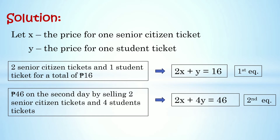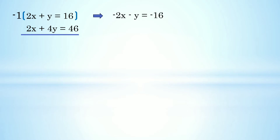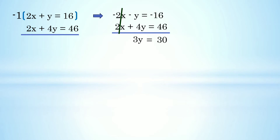Dahil meron na tayong dalawang equations, pwede na natin hanapin yung presyo ng bawat ticket. Ang ginamit ko ay elimination method. Dito sa ating system, pwede natin i-cancel si x kasi pareho silang positive. Mag-multiply lang tayo ng negative 1 sa ating first equation: negative 1 times 2x is negative 2x, negative 1 times y is negative y, and negative 1 times 16 is negative 16. Then copy the second equation. Maka-cancel na natin si x: negative 2x + 2x = 0. Add the remaining: negative y + 4y = 3y, and negative 16 + 46 = 30. Divide both sides by 3.